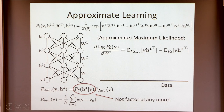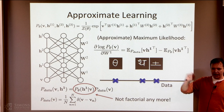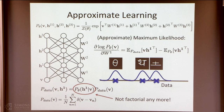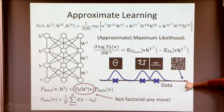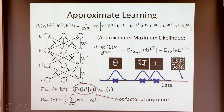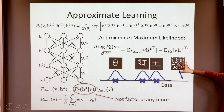Intuitively, if I see some data, I'd like to assign probability mass to those data points — that's what the first term is trying to do. But when I look at the exponential space, I want to assign exponentially small probability to other regions. That's what the partition function, the normalizer, is doing. The derivative of the log of the partition function is just the expected sufficient statistics, and approximating that is generally a difficult problem.